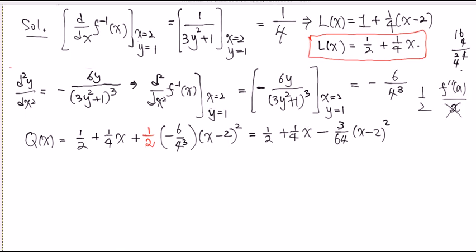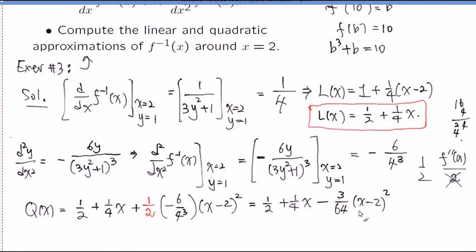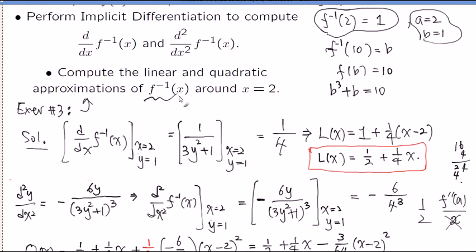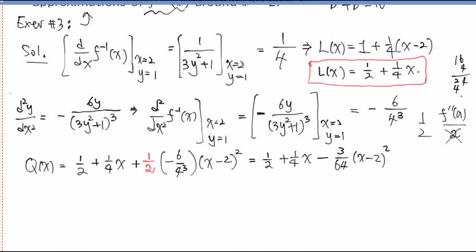So if you sketch that just around x equals 2, it's going to resemble the shape of the y equals f inverse, that you sketched from flipping the original function. That shape looks a lot like this quadratic function. That's what we have just accomplished.